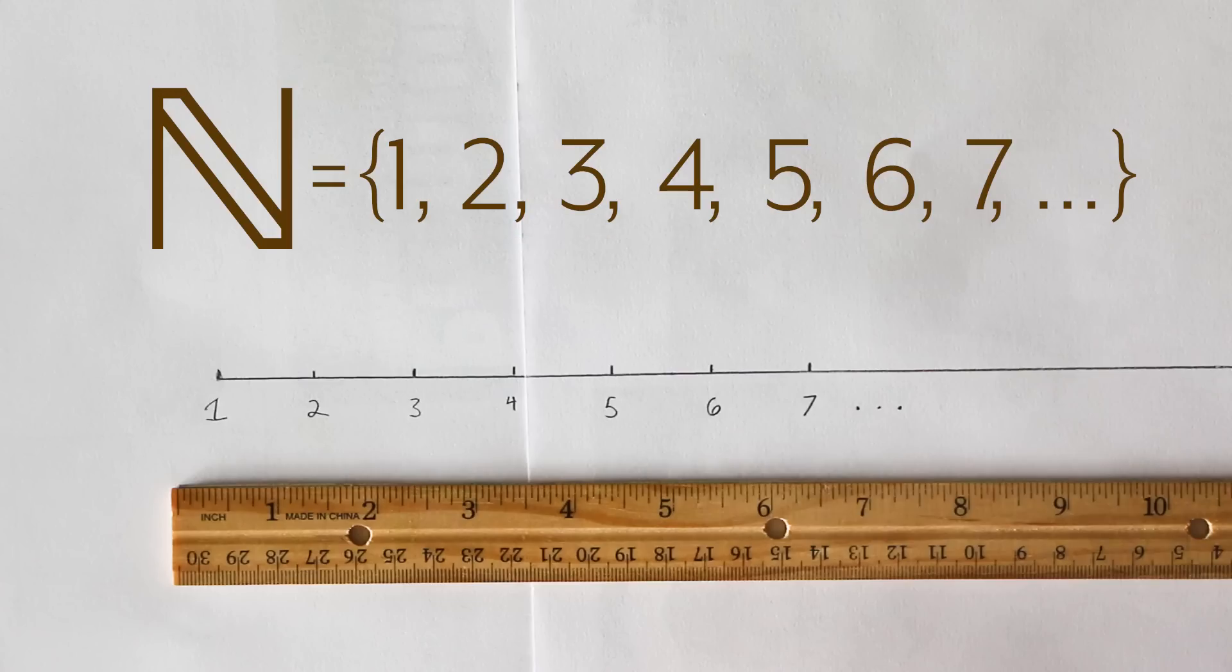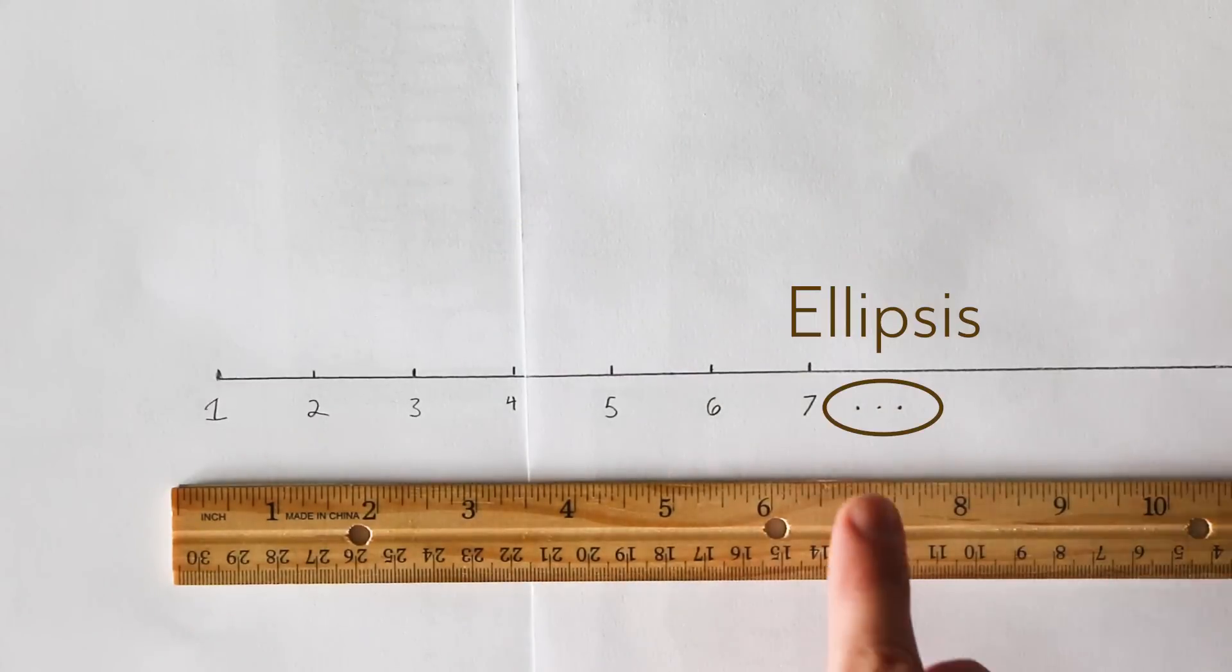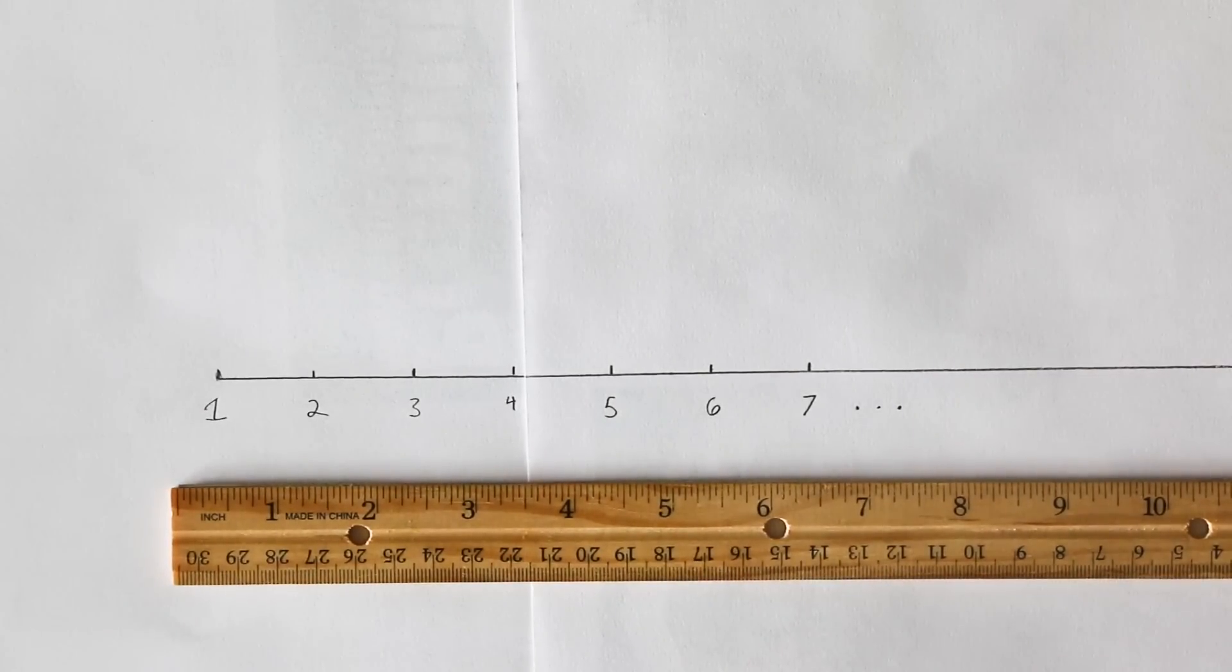Let me pause here and throw out a few terms. We're gonna call collections of numbers a set. We will call the things in the set elements, which in this case are numbers. And that little thing here is called an ellipsis. Basically it means just follow that pattern out to infinity. So that's the natural numbers.